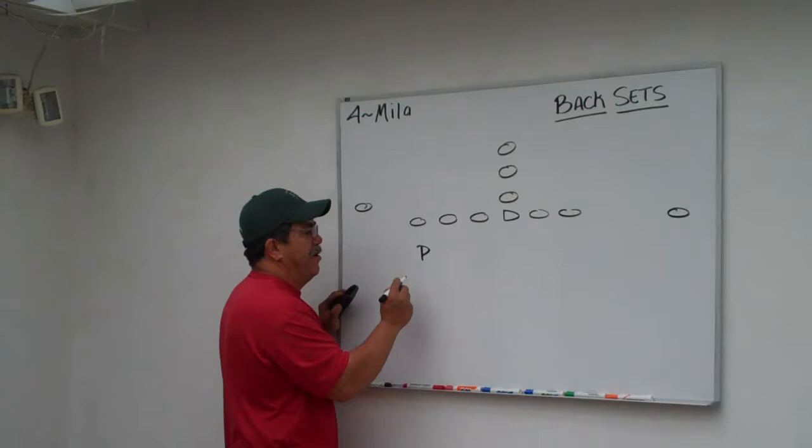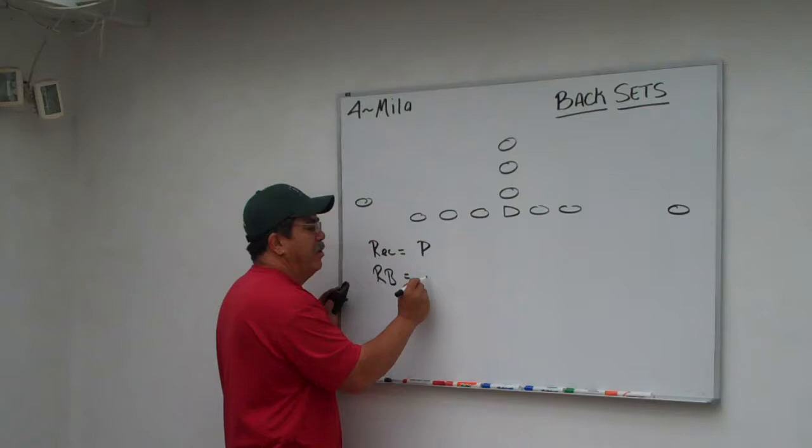In our case, we identify the receivers with a capital letter. So the receivers equals a capital letter. Running backs will equal a lowercase letter.